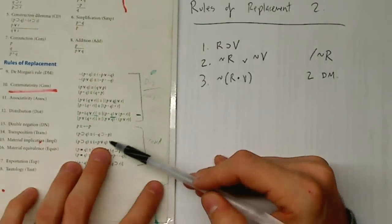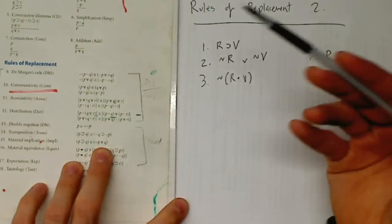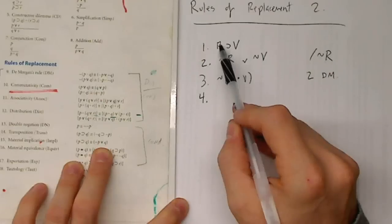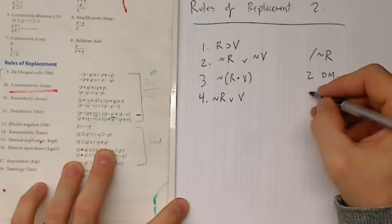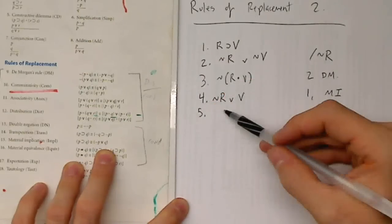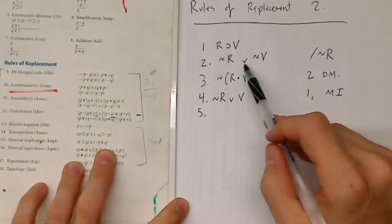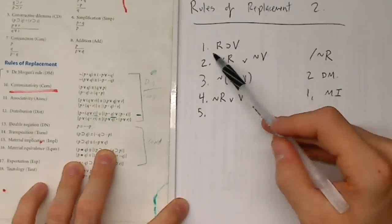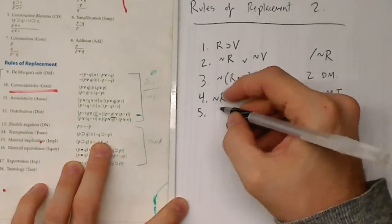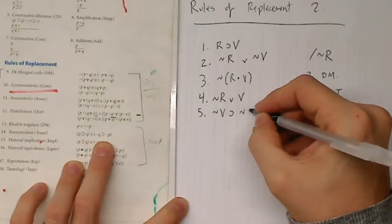Now that I've done the material implication, is that going to be helpful? I need this ¬R by itself. So if I could get a ¬¬V, if I could get V by itself, that would work — but that would require me to get R, and I don't have R here. Let's try a transposition too. The transposition turns R→B into ¬B→¬R — it basically switches it around from ¬Q to ¬P.